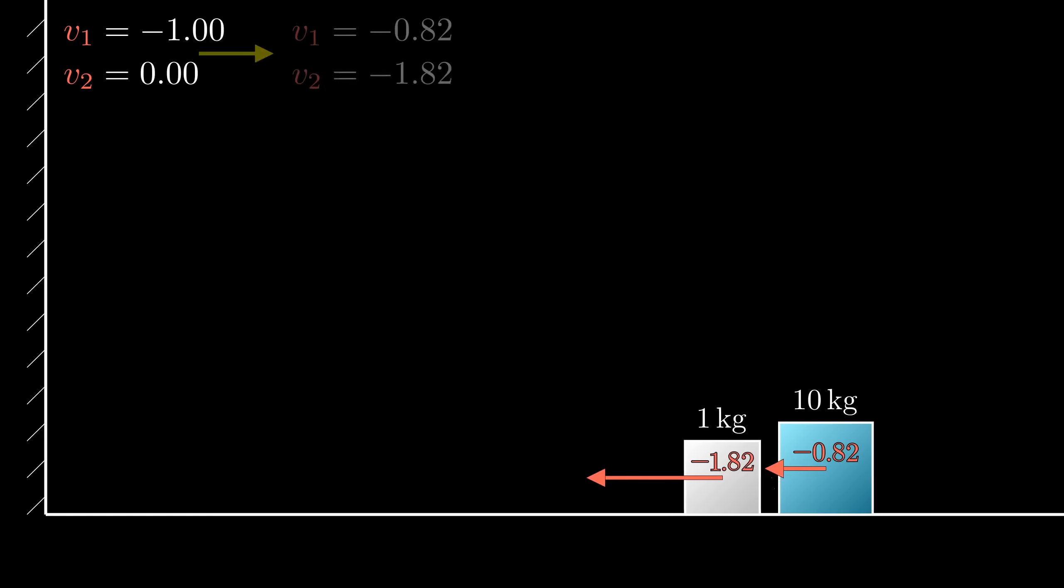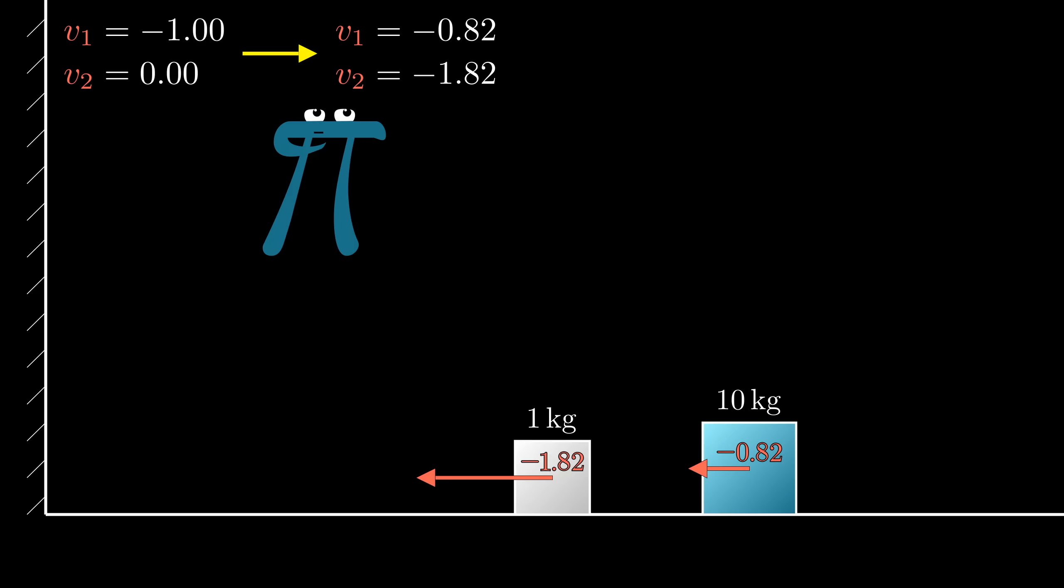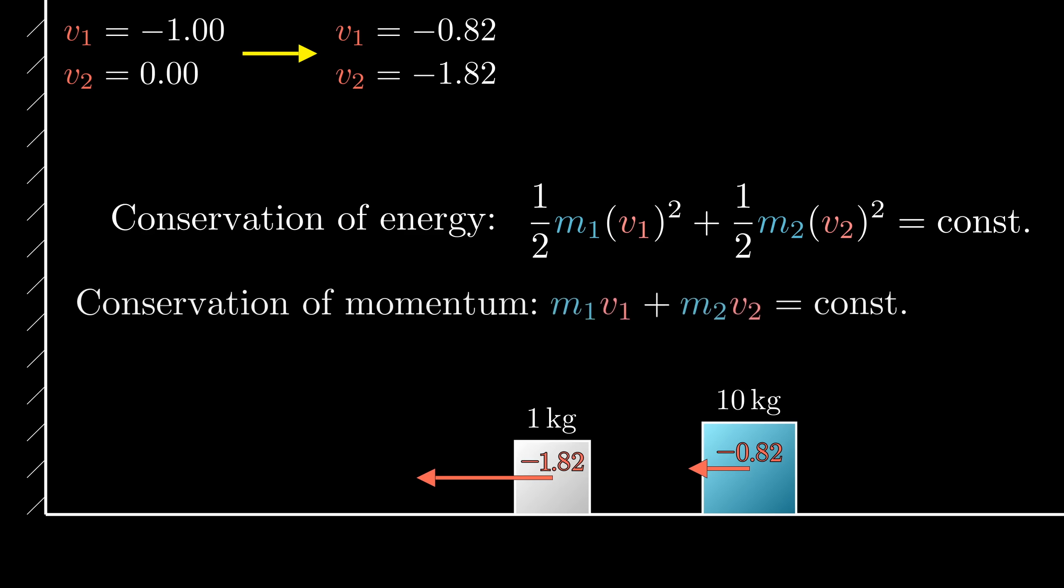To start, when one block hits another, how do you figure out the velocity of each one after the collision? The key is to use the conservation of energy together with the conservation of momentum. Let's go ahead and call their masses m1 and m2, and their velocities v1 and v2, which will be the variables changing throughout the process.